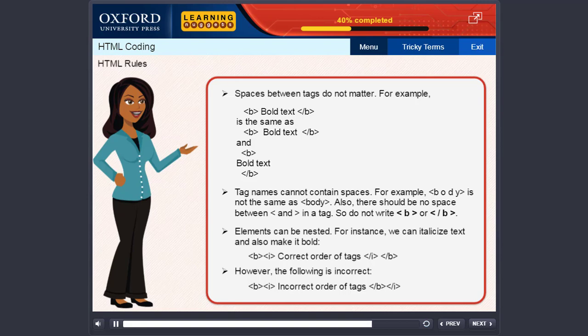Elements can be nested. For instance, we can italicize text and also make it bold. Look at the example given below. However, the following is incorrect. Care must be taken to ensure that the closing tags are in the reverse order to the opening tags. That is, the innermost opening tag should be closed first.